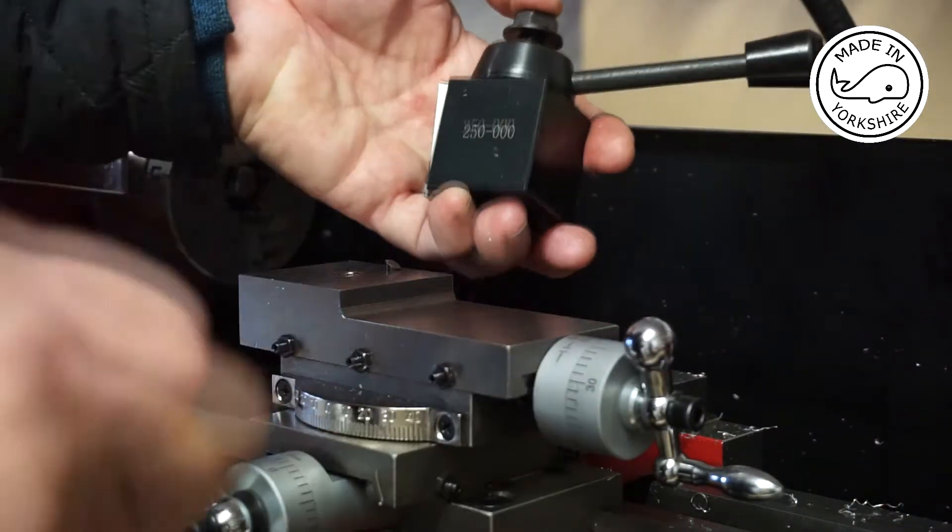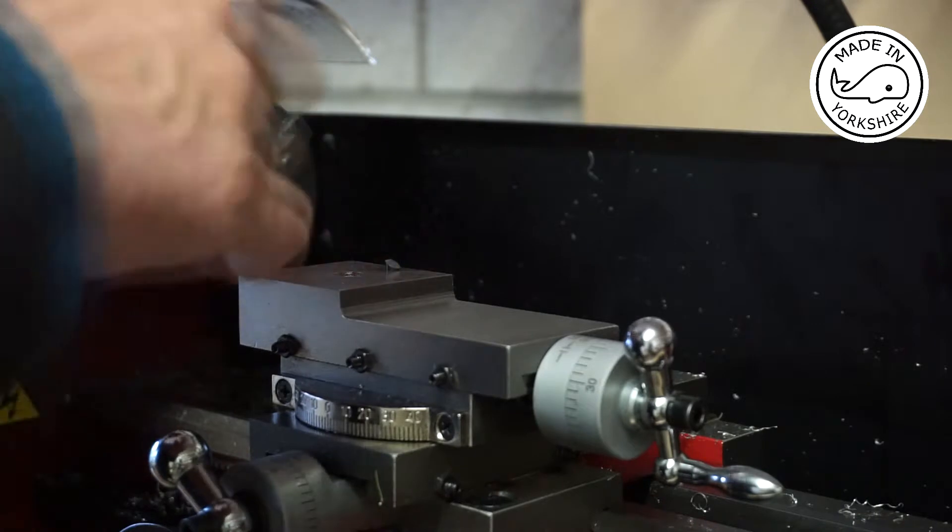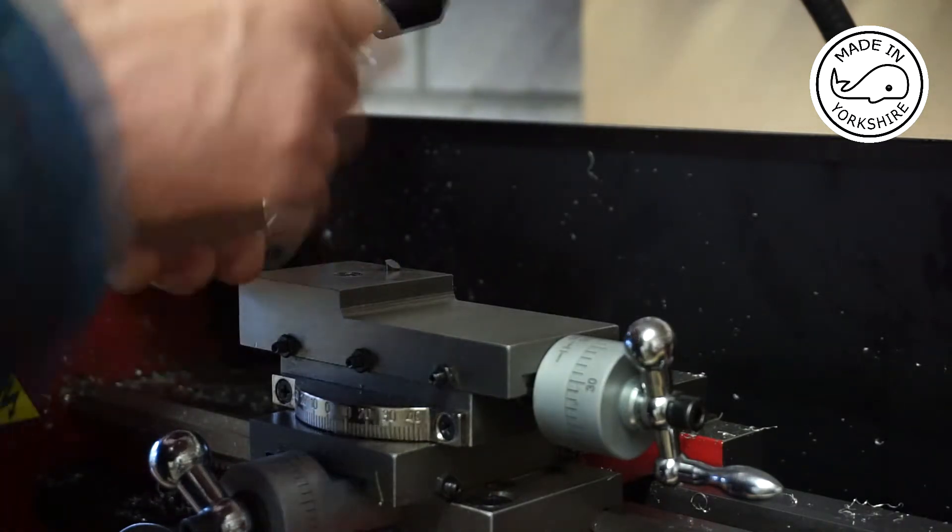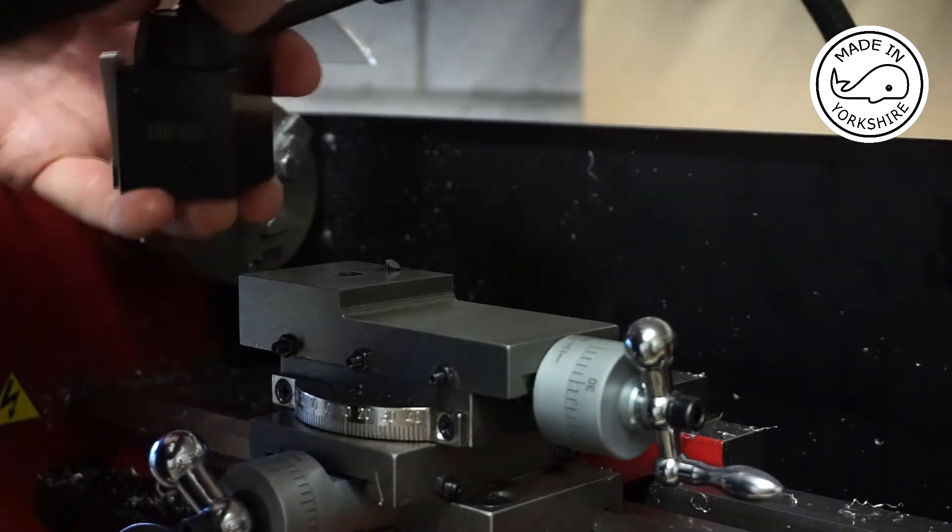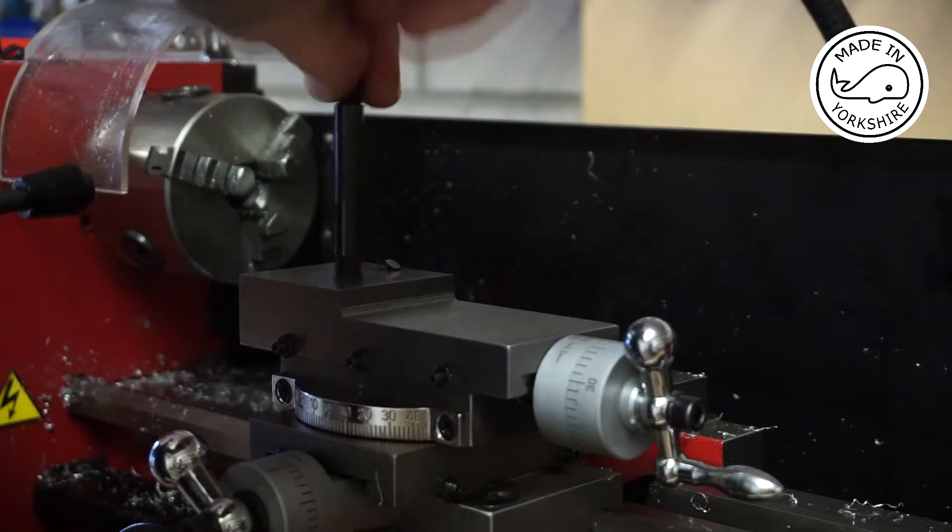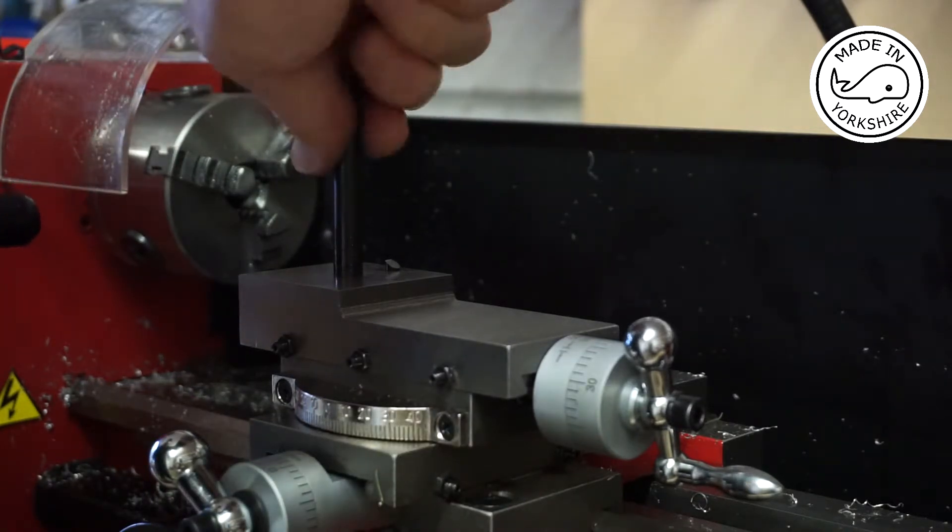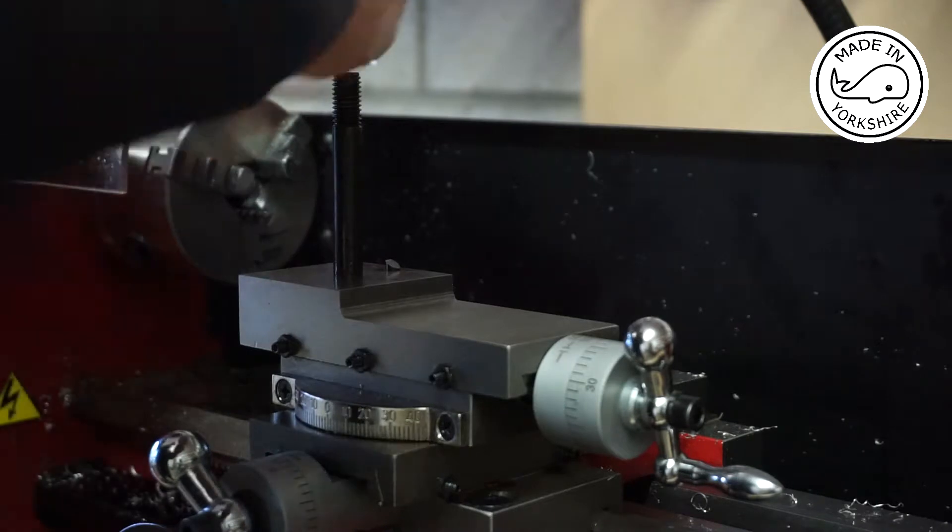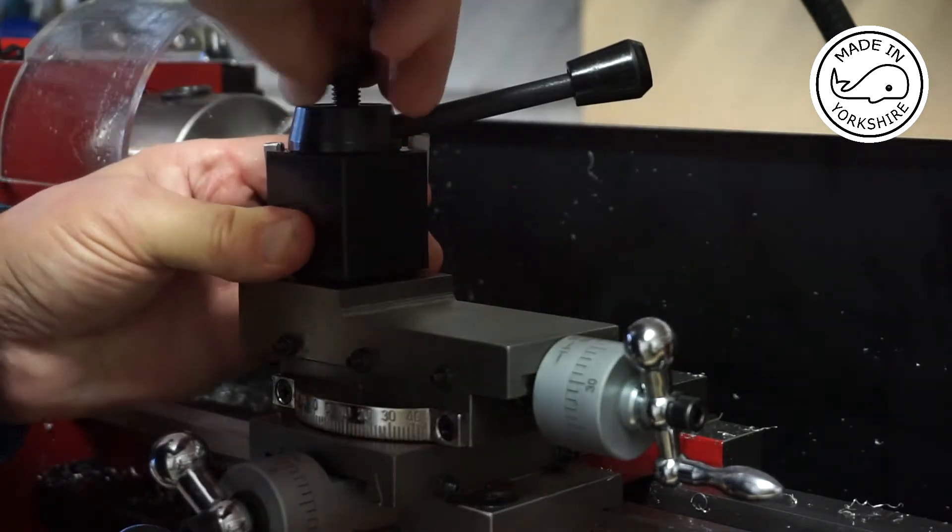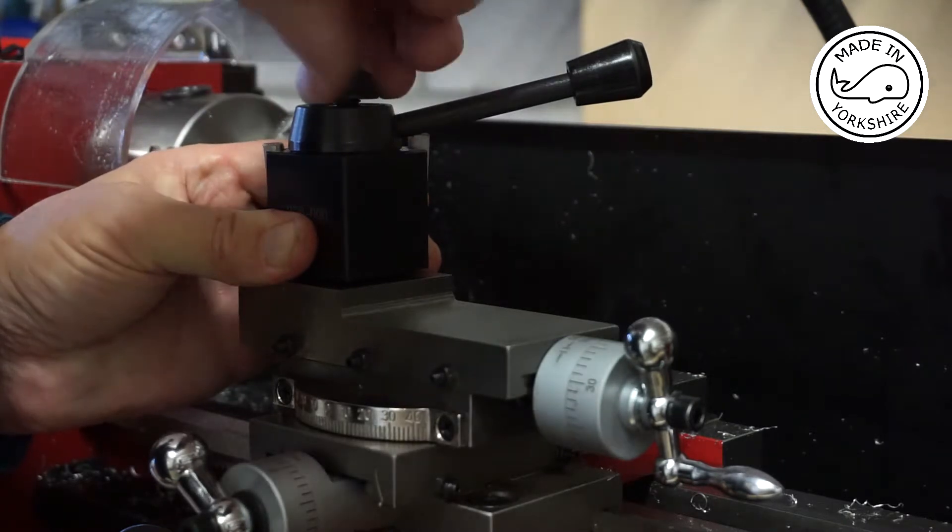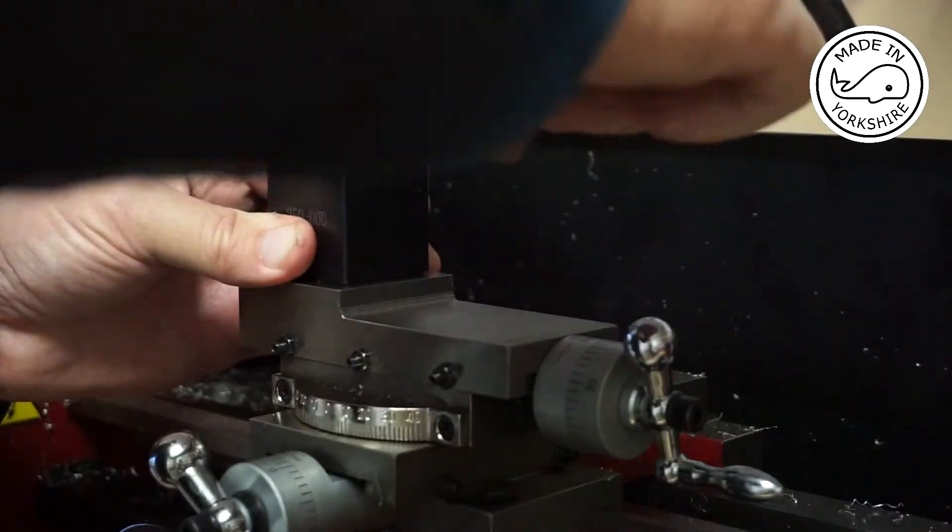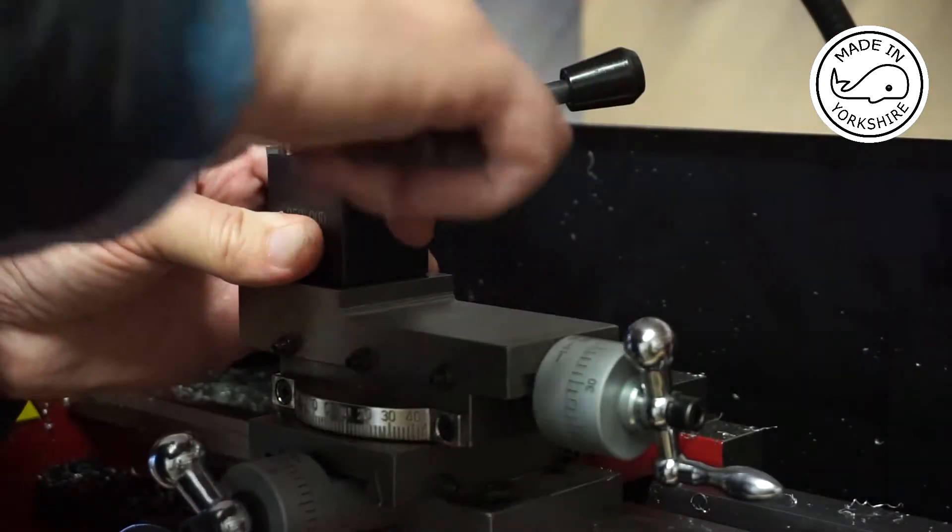Now the quick change tool post, so we need to clean the surfaces and make sure that they're OK. The quick change tool post comes with its own bolts, so if I take the bolt out and screw that in fully, then put the quick change tool post on and tighten it up.